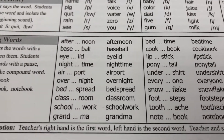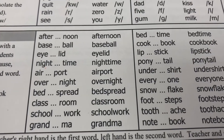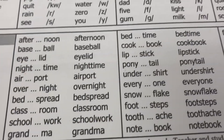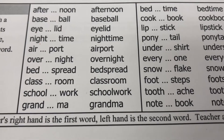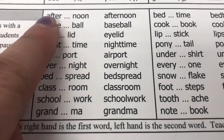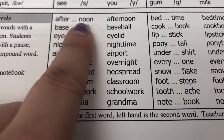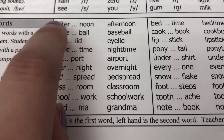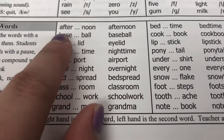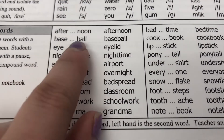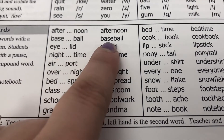Now we are going to blend our words together. I'm going to say the word with a pause in between and then students will repeat the word with a pause and then say the compound word together. First one: afternoon — afternoon. Baseball — baseball.